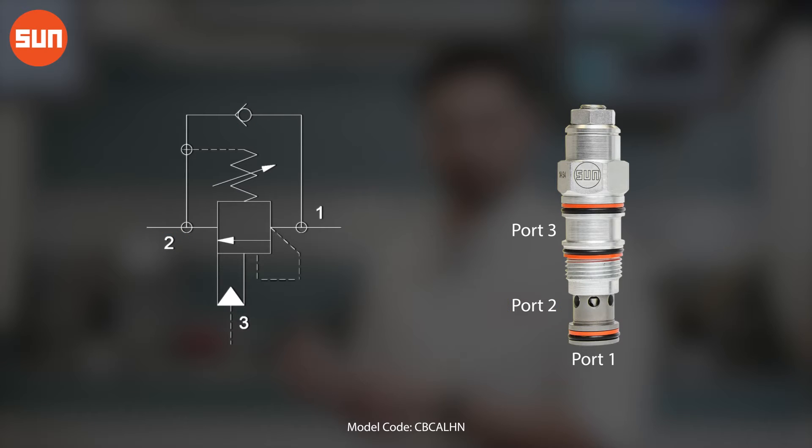Another way to open the valve is using the pilot assist function on port 3. This allows pressure from other parts of the hydraulic system to decrease the setting of the CBCA and open the valve, allowing flow from port 1 to port 2.